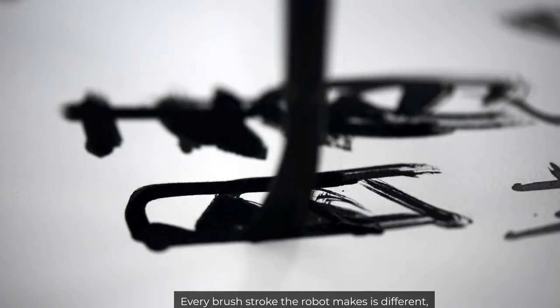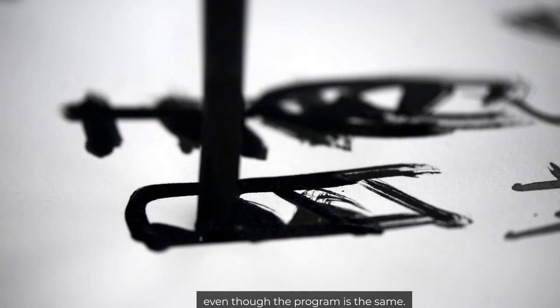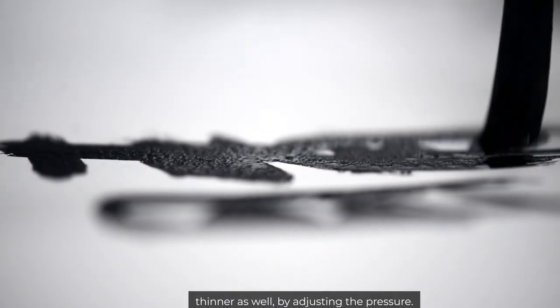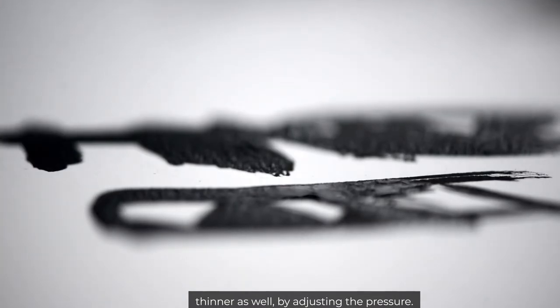Every brush stroke the robot makes is different even though the program is the same. The brush strokes can be made thicker or thinner as well by adjusting the pressure.